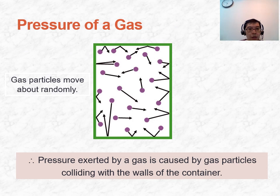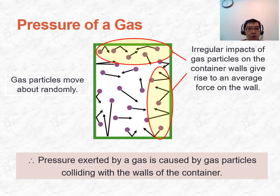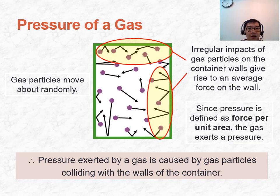We will now take a look at the pressure of a gas. Under the kinetic theory, the gaseous particles are moving about in all directions at all possible speeds, so they will collide with the walls of the container. By colliding with the walls, there is a force exerted, and pressure is defined as the force exerted per unit area on the walls of the container.